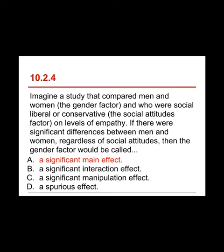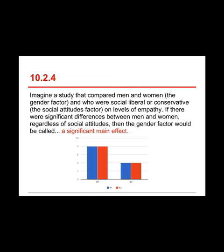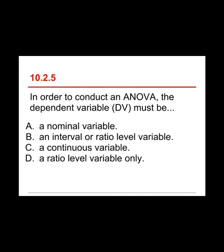Here is what a significant main effect looks like on a two-factor analysis of variance — looking at factor B, the two bars on the left have a higher average than the two bars on the right, and whether they're blue or red is irrelevant. That is a significant main effect.